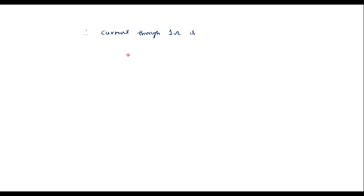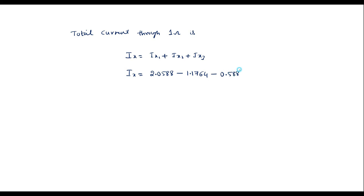Therefore, by superposition theorem, the total current through the 1 ohm resistor is Ix equals Ix1 plus Ix2 plus Ix3, that is 2.0588 plus (minus 1.176) plus (minus 0.588). Simplifying, Ix equals 0.294 amps. So the current through the 1 ohm resistor Ix equals 0.294 amps. This problem is solved using superposition theorem. Thank you for watching.